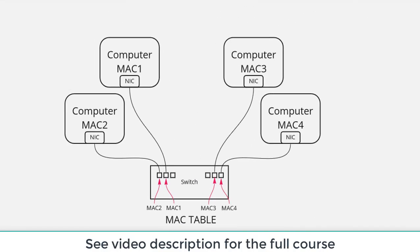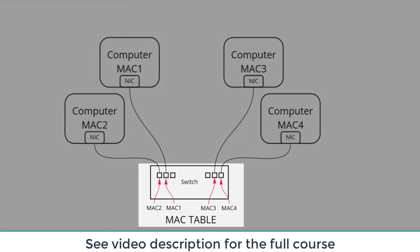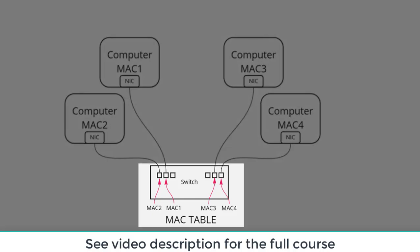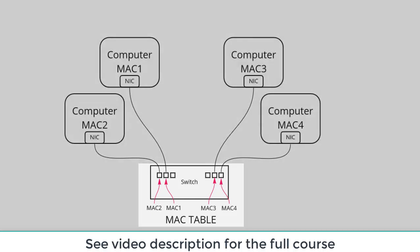Here we see our four computers connected to our Ethernet switch. You'll notice that the switch knows about all of the MAC addresses of those computers — it's got its MAC table. And let's say that computer one wants to communicate with computer two.